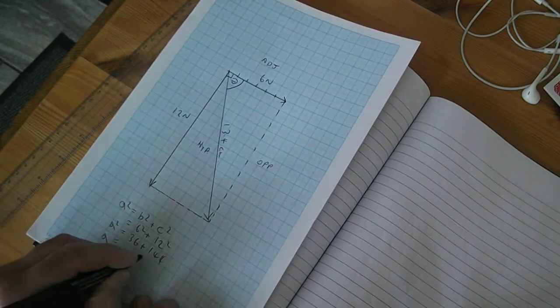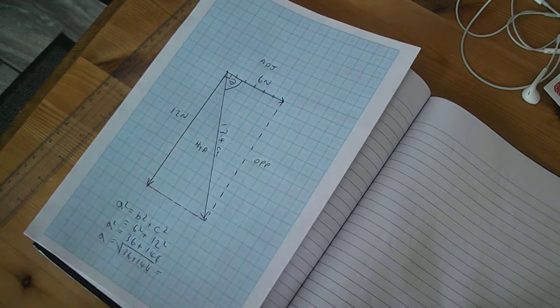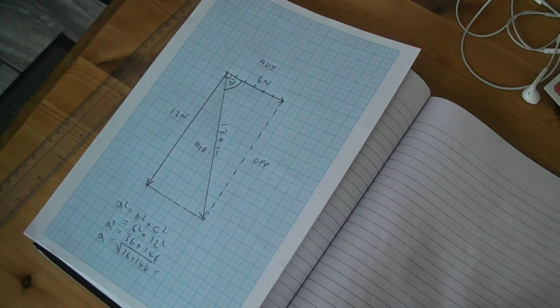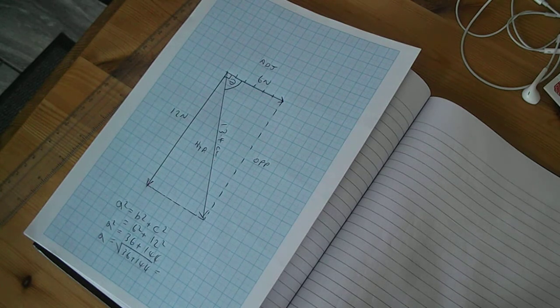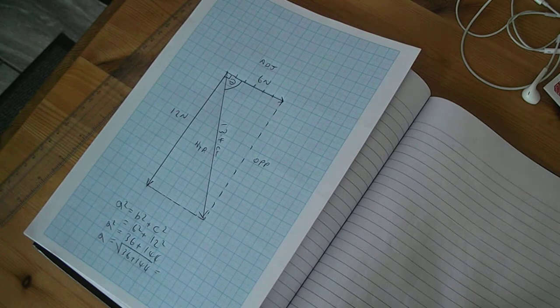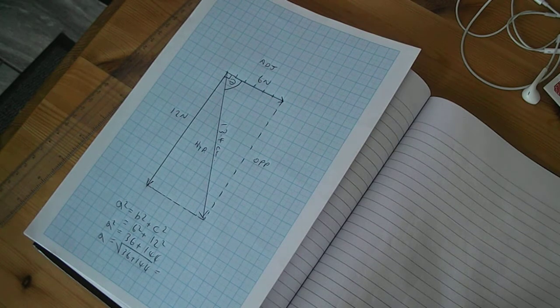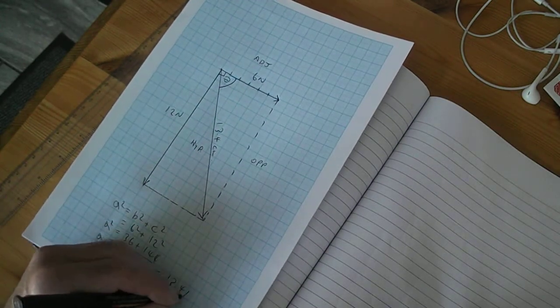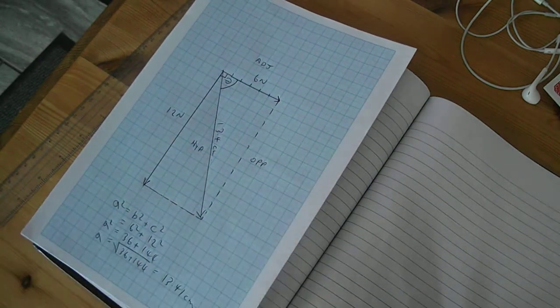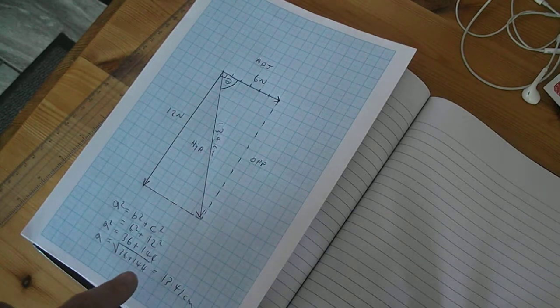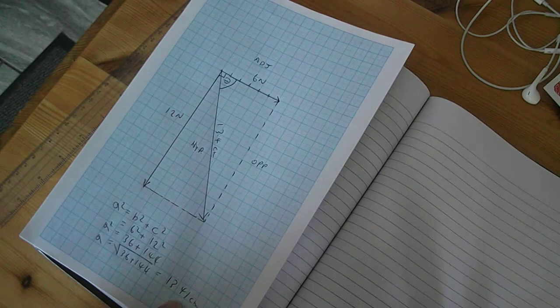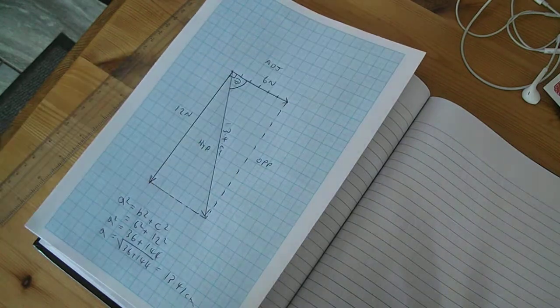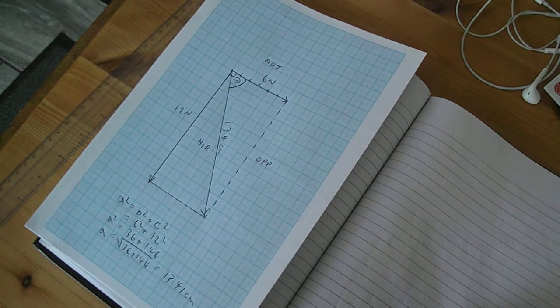So a equals the square root of that. Let's have a look: 36 plus 144, the square root of that comes to 13.41. We can see there that that's a much more accurate way of working that out. So in the second clip we'll develop this a little bit more, trying to find this angle as well. Okay, thanks very much.